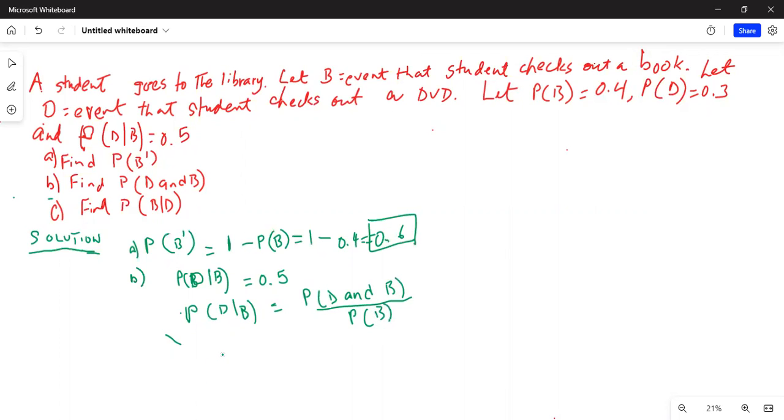Now probability of D given B has already been given to us in the problem statement. It is 0.5, which equals probability of D and B divided by probability of B, and that is also given to us as 0.4.